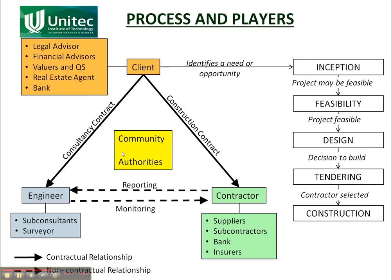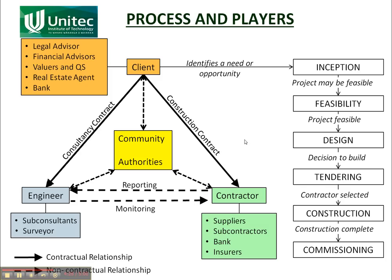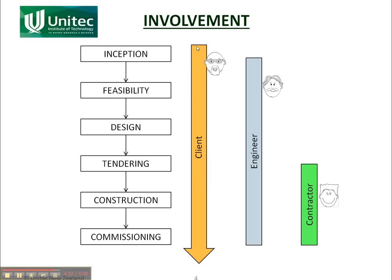There's also the community — the people in the area — and the local authorities and consenting authorities, and all three parties are involved in communicating with them. When the construction is complete, the works are commissioned and handed over to the client. The client is involved right from the start; at commissioning he takes over control of the project works and is involved further on. The engineer's responsibilities start at inception and end when the project works is commissioned. Same with the contractor — at the end of commissioning, the contractor is finished. The next few slides look at each of these parties in more detail.